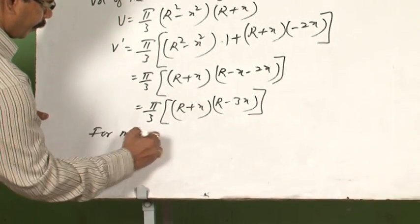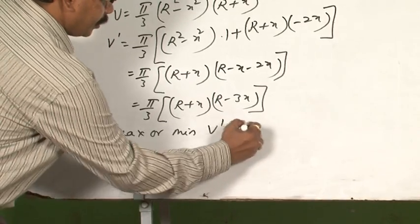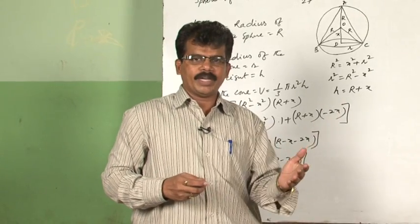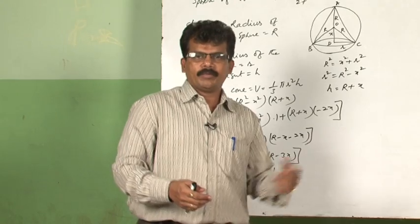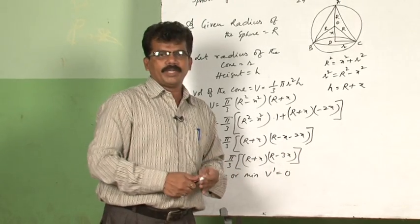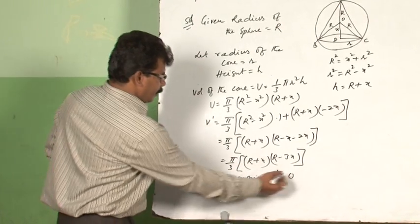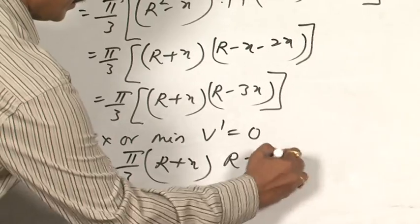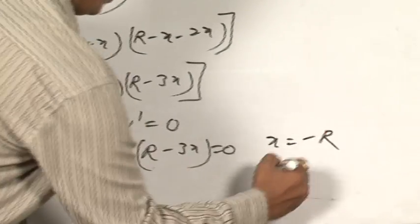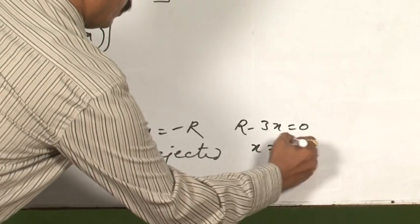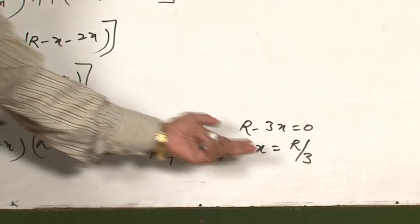We have written V dash in factored form so we can find critical points easily. For maxima or minima, we set V dash equal to 0: pi by 3 times (R plus x) times (R minus 3x) equals 0. Therefore, x equals minus R — not possible, rejected, since the radius of the sphere cannot be negative. The second solution is R minus 3x equals 0, giving x equals capital R by 3. So this is the critical point we need to check — whether the volume of the cone is maximum or minimum at this point.